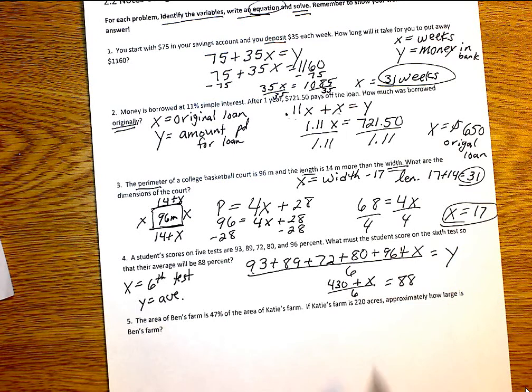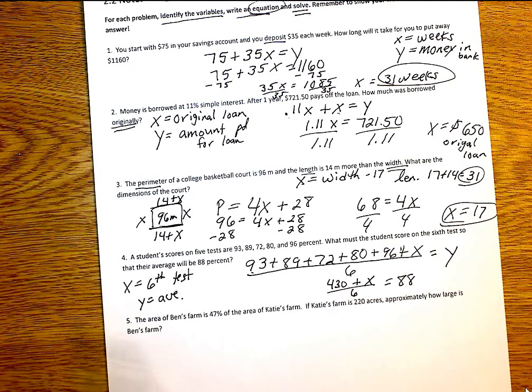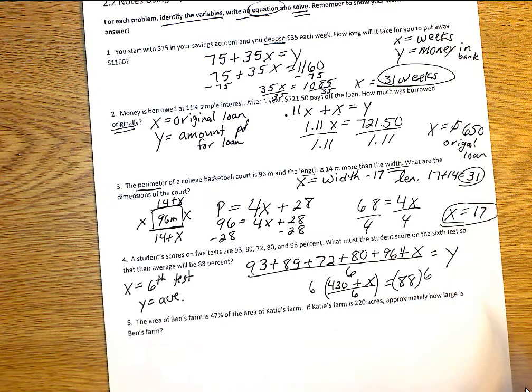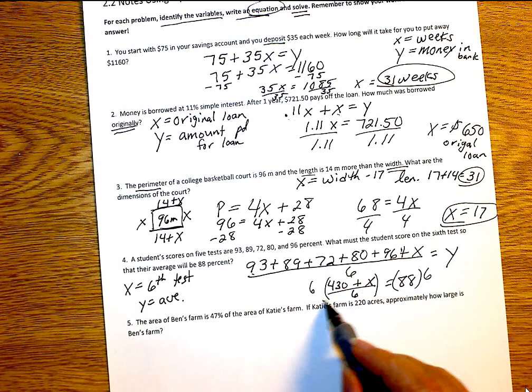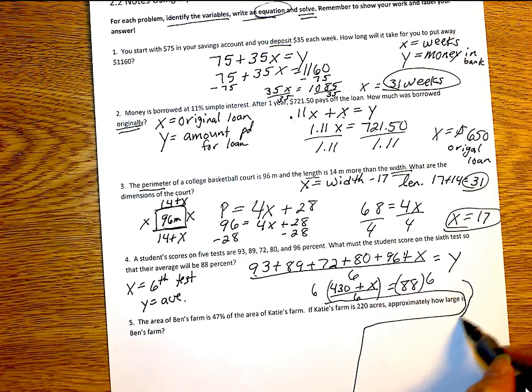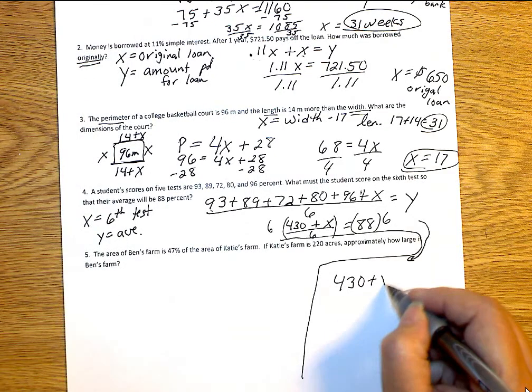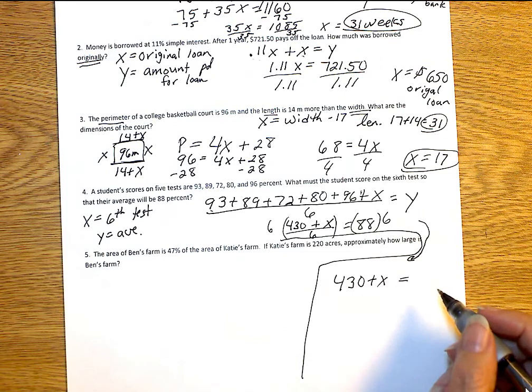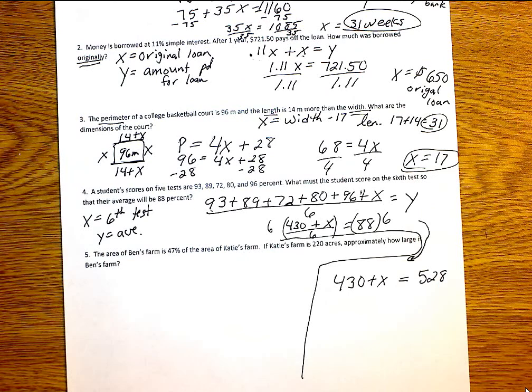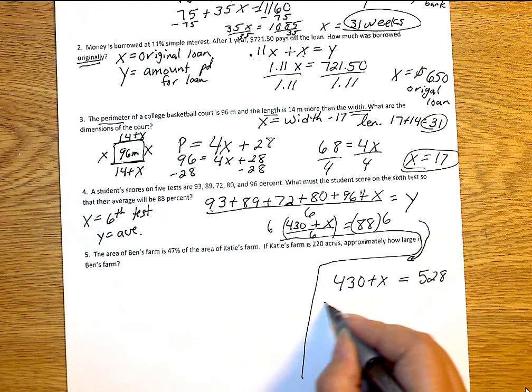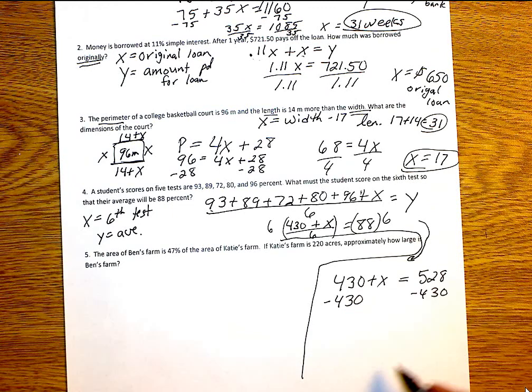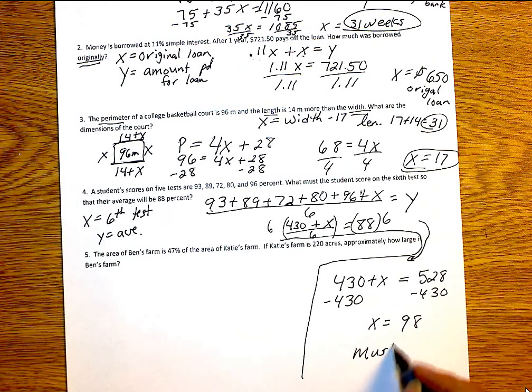Now, I want to get rid of this six right here. If I want to get rid of that six, what can I do to both sides here? What can I do to both sides? Multiply by six. Yep. Opposite. So, we're going to multiply both sides by six. Because of space, guys, I'm going to come down here. So, this will go down there. So, we have 430 plus X on my left side. And, 528 on my right. And then, your last step would be? Minus 430. Minus 430. So, X is going to equal 98. So, what does that tell us? That the student must get a 98%.